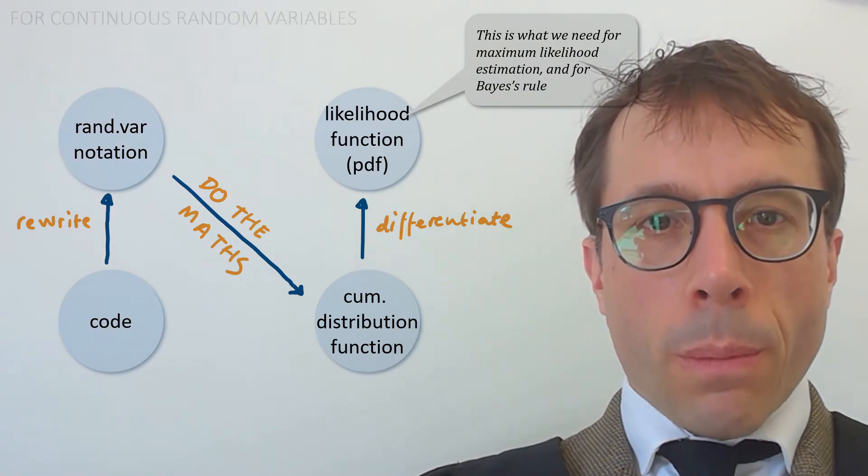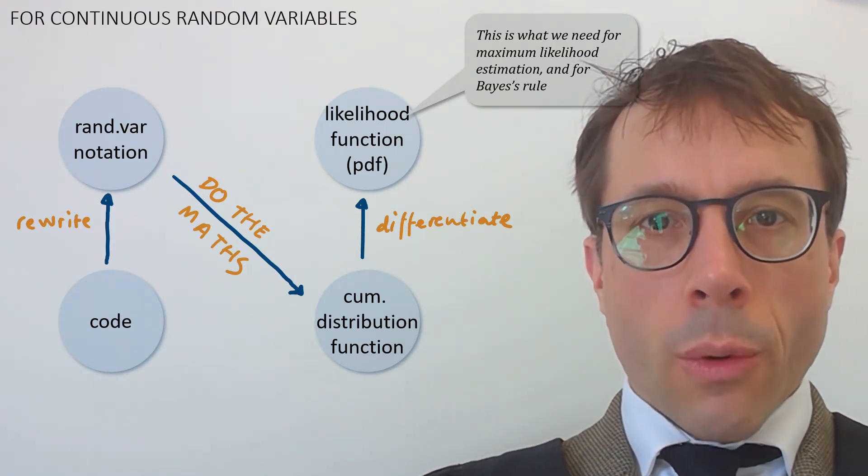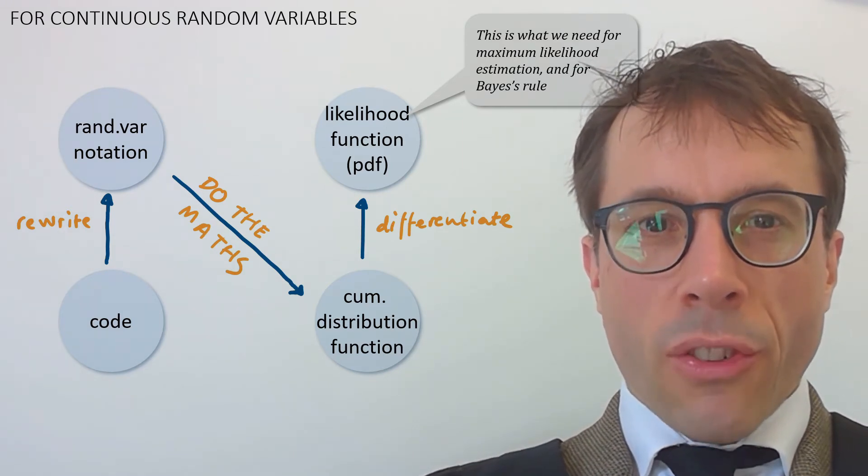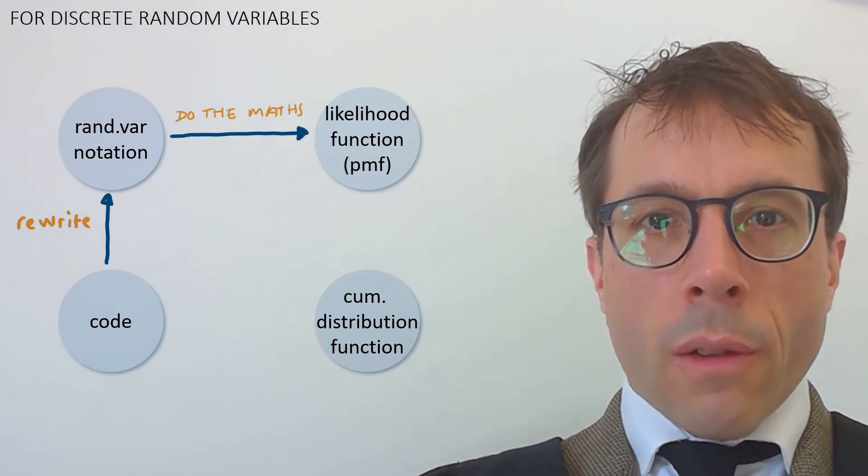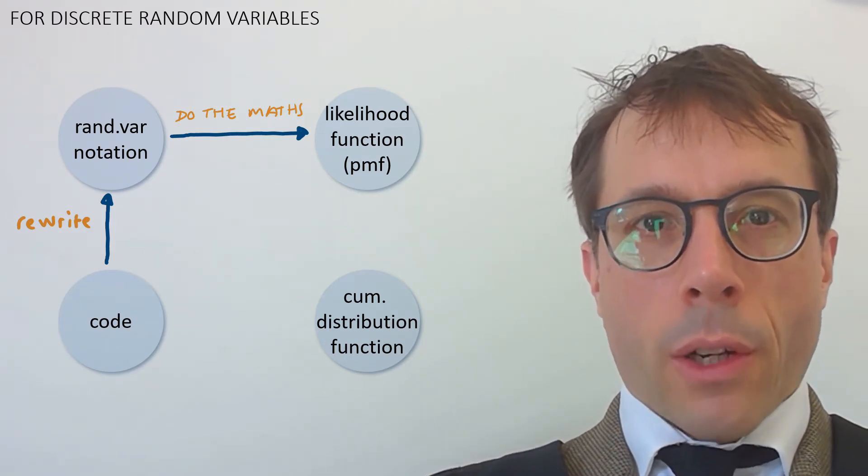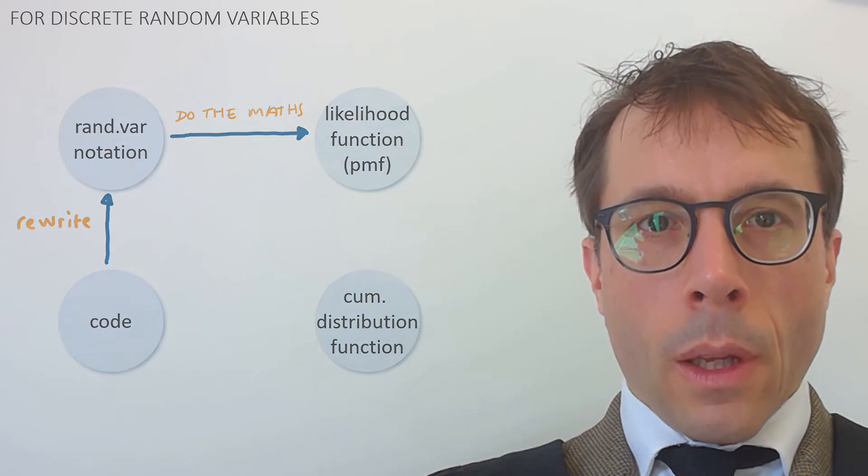This is the typical process when we're dealing with continuous random variables. For discrete random variables, it's typically a bit simpler. Often, it's possible to go straight from the random variable notation to the likelihood function, i.e. the probability mass function. Let's work through some examples.